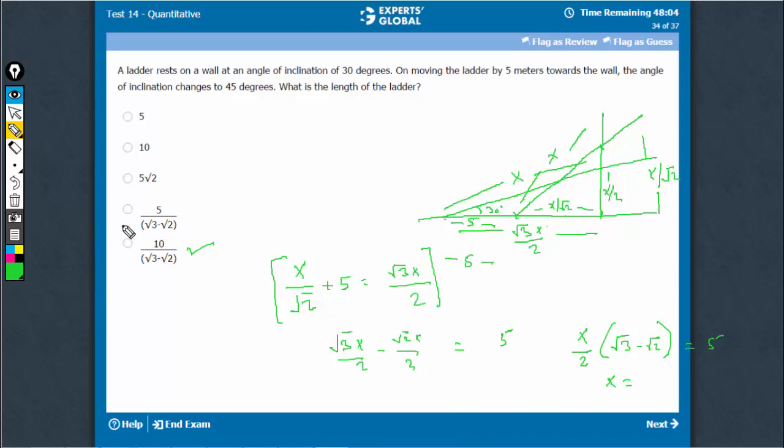5 into 2 upon root 3 minus root 2, 10 upon root 3 minus root 2. That's the answer, option E.